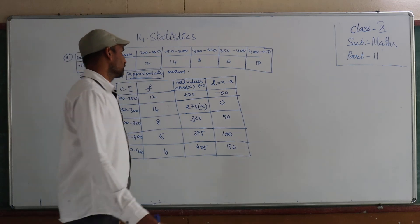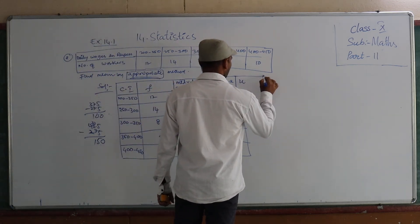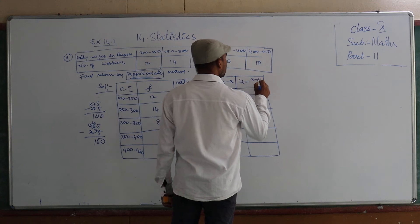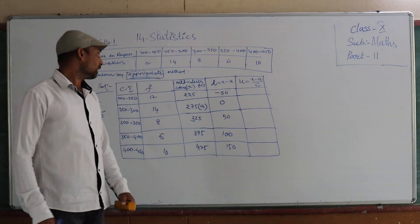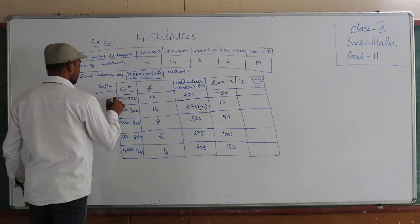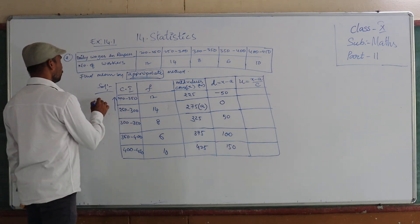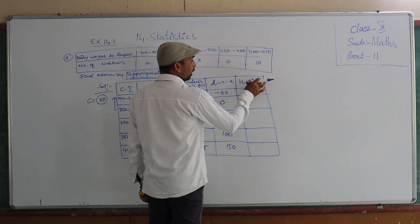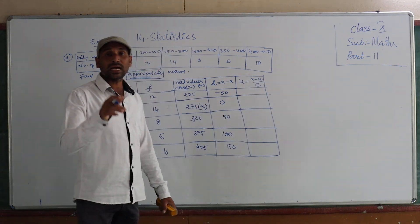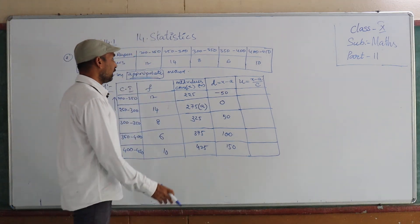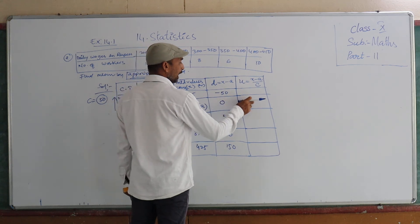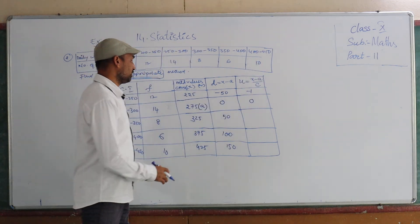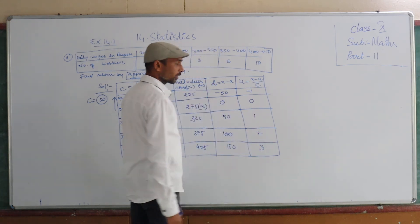Then Ui. Very carefully children. So here Ui is nothing but Xi minus A by C. So here C, the value is the difference between these two: 250 minus 200, so 50. This is class interval or class size. So we can use this formula. Then otherwise I told you one condition: same way we are getting 0 in the Di. The row with 0, take 0 for U. Then above the 0, take minus 1, minus 2, minus 3, like that. Below the 0: 1, 2, 3.